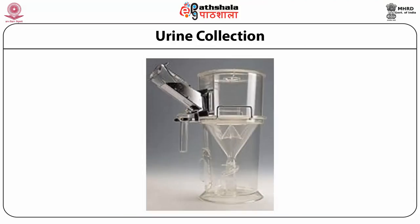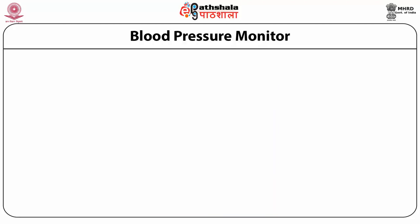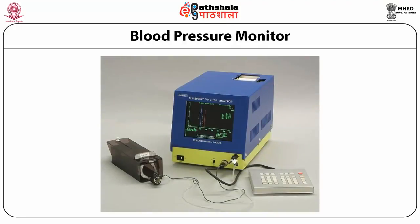A metabolic cage is used to collect urine from your mouse, which is helpful in metabolic studies and other research. An instrument for monitoring blood pressure in mice is also commercially available for research use.